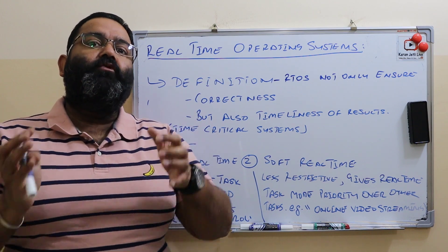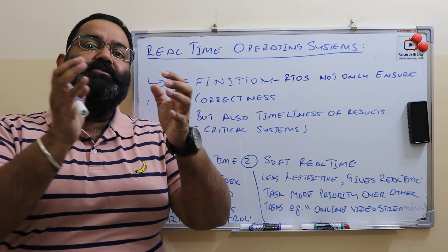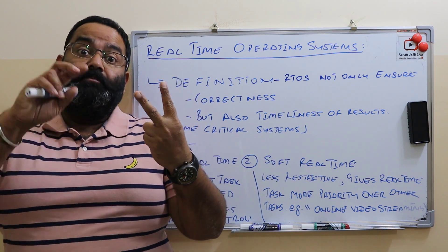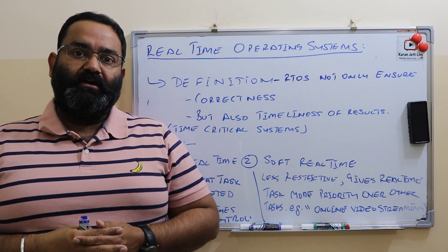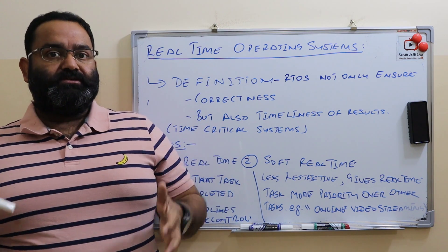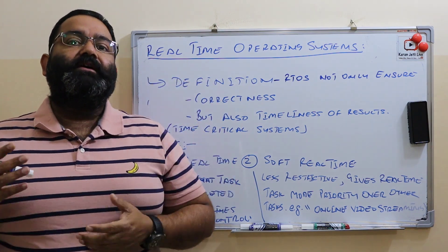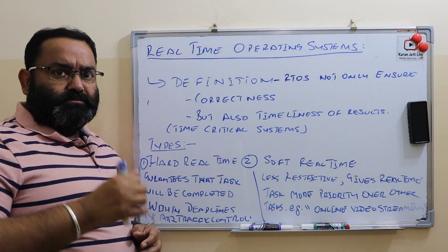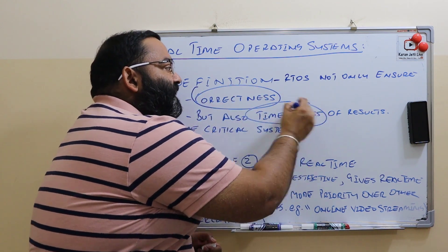In this system we cannot afford delay to generate results. Results should be correct, and results should be within the deadlines — they should not be generated after the deadline. Real-time systems are basically time-critical systems which should produce the correct result in a given amount of time. So the two important things are correctness and timeliness.